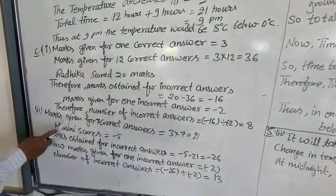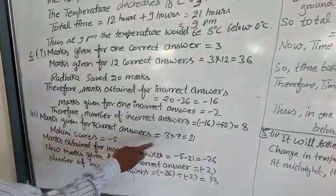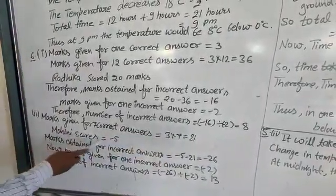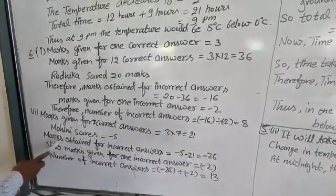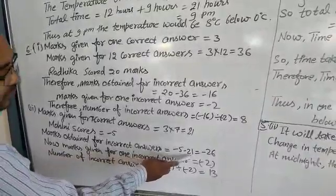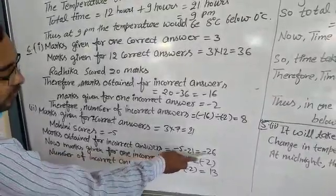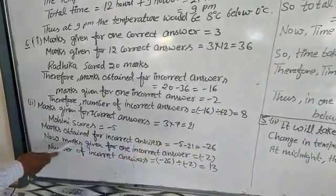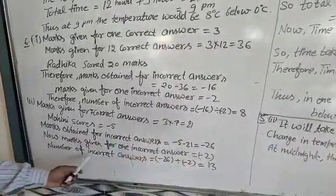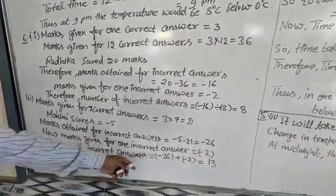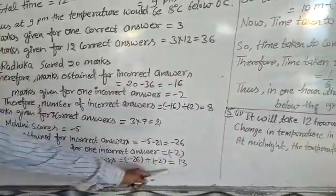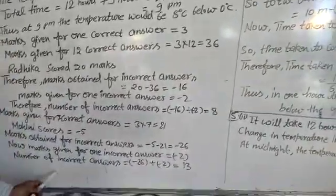Marks given for 7 correct answers: 3 multiplied by 7 equals 21. Mohini's score is minus 5. Then marks obtained for incorrect answers: minus 5 minus 21 equals minus 26. Marks given for 1 incorrect answer: minus 2. Number of incorrect answers: minus 26 divided by minus 2 equals 13. So 13 is the number of incorrect answers.